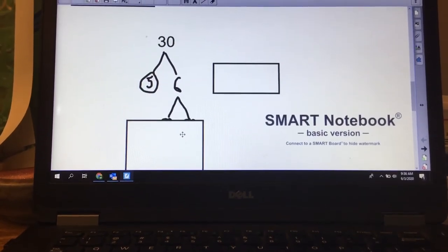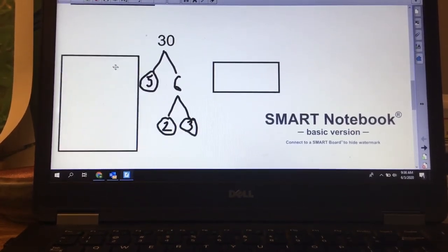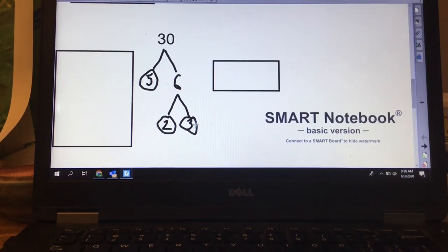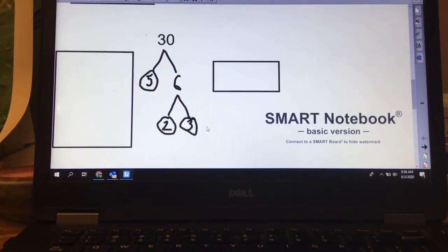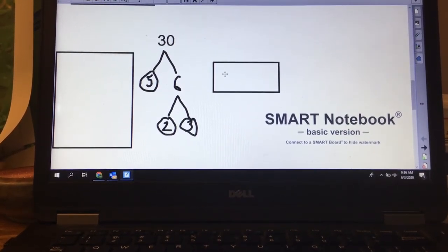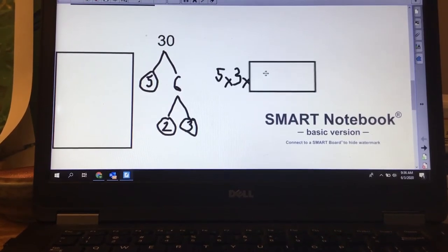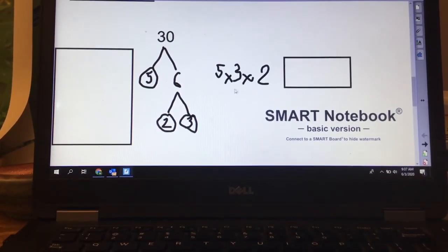6 is an even number, so I divide it by 2 and I'm left with 3. I know 3 is prime, so I can circle that as well and I'm finished. So 30 as prime factorization is 5 times 3 times 2.